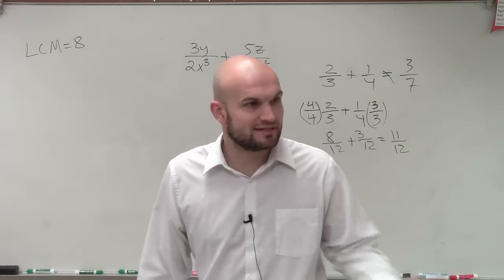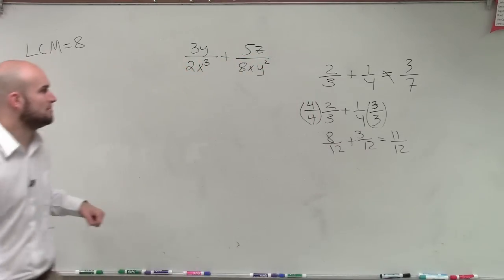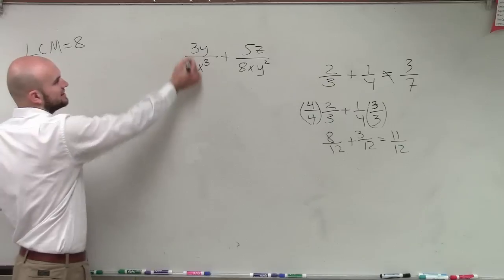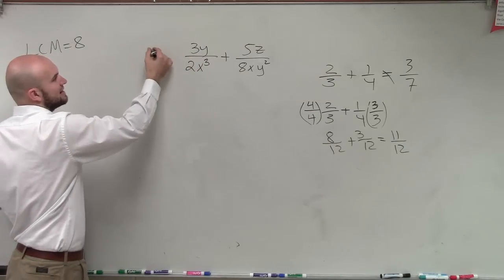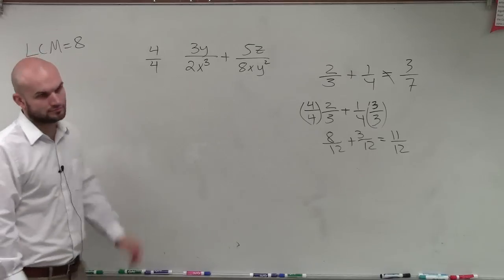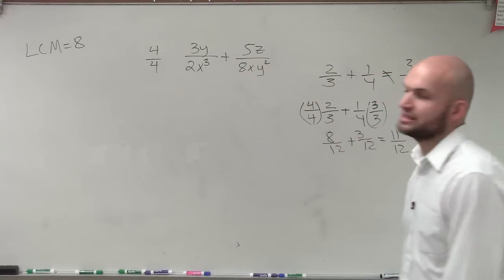2 and 8 both divide into 8. So that's why that's the smallest number. So therefore, to get this to be 8, I need to multiply by 4 over 4. We're going to add some more numbers here in a second. Now let's look at the X's.